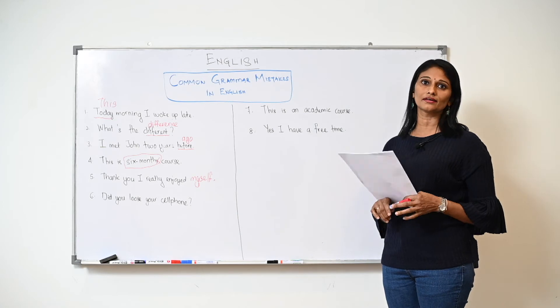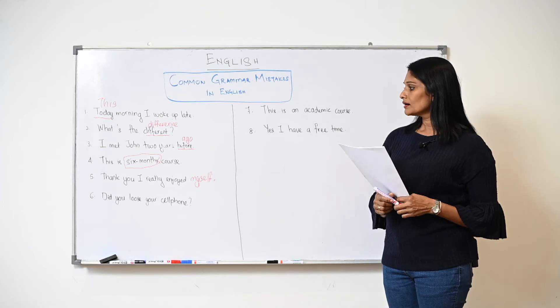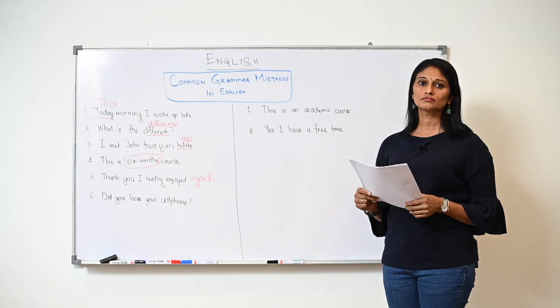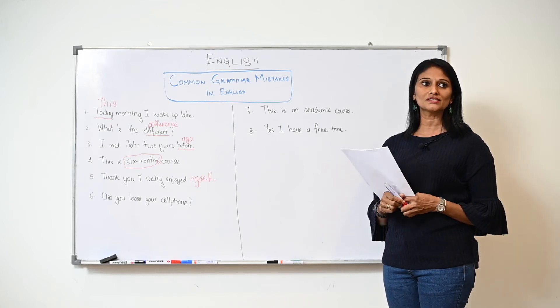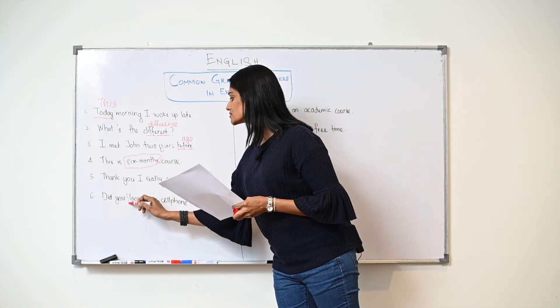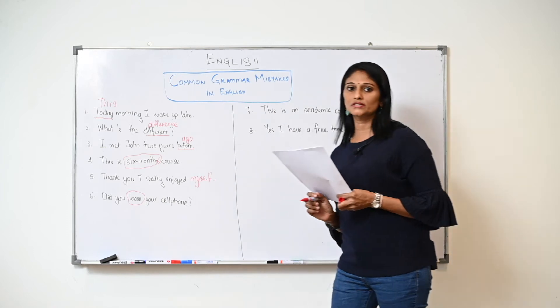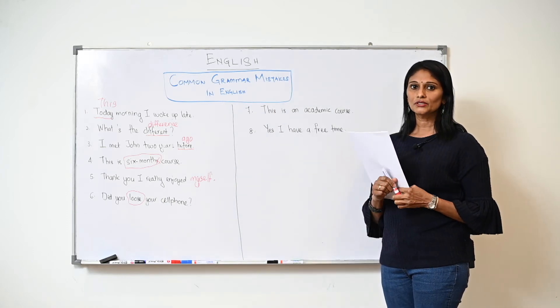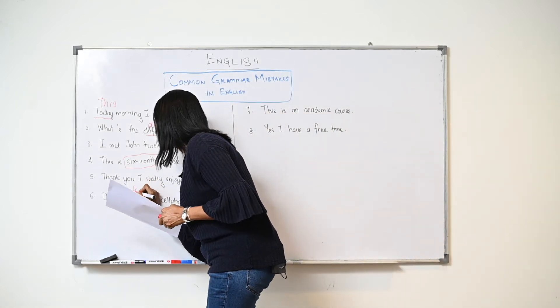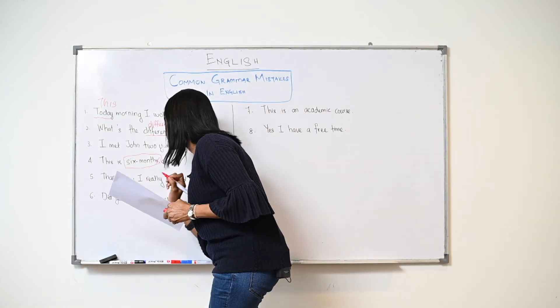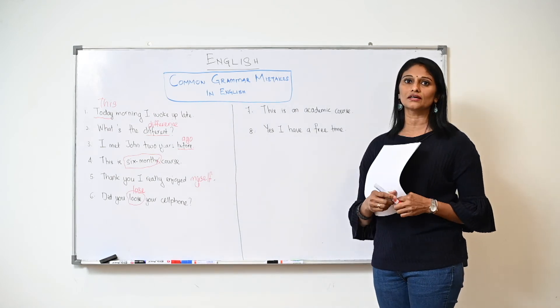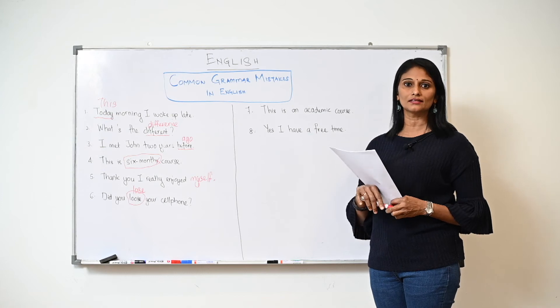Number six: "Did you lose your cell phone?" This is a common mistake where all of us make. Is this correct? This is just a spelling error. We would say "lose" - L-O-S-E. This "loose" here is like something got loose, it's not tightened enough. We don't use that "loose" in this sentence.